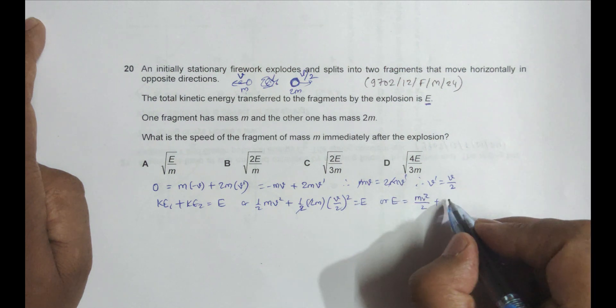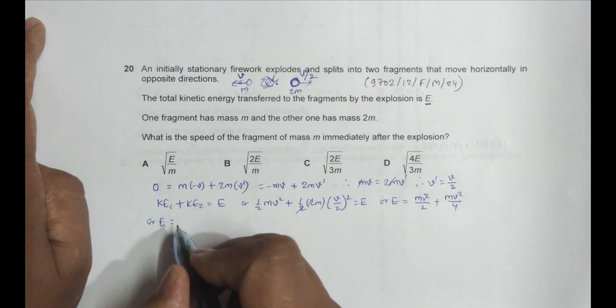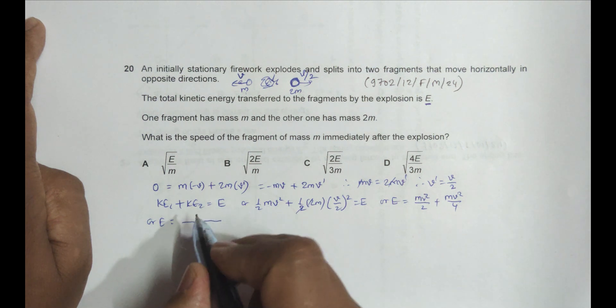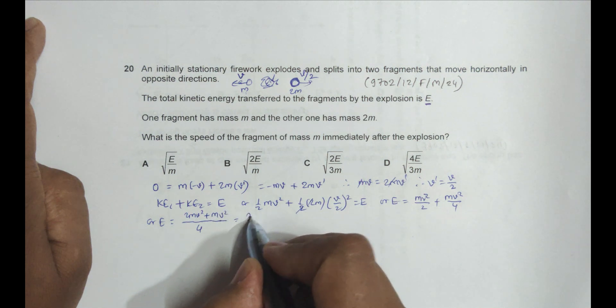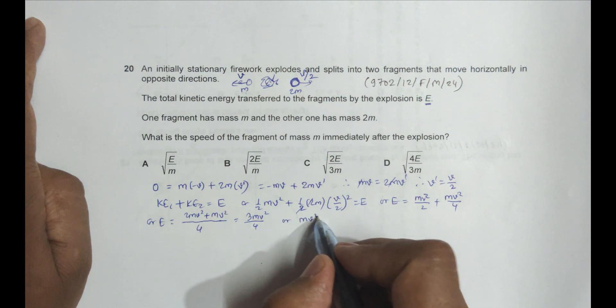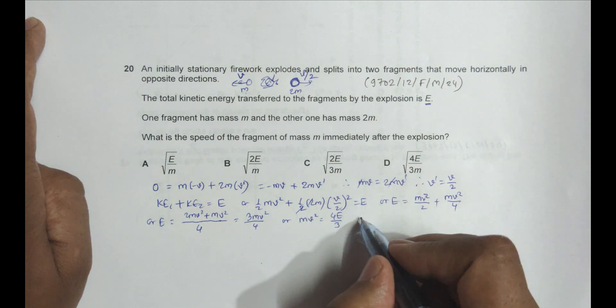Which gives us E equals... if I take the LCM, this is 2MV² plus MV² which becomes 3MV²/4. It gives us MV² = 4E/3M.